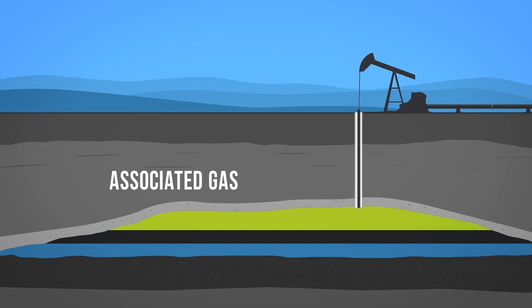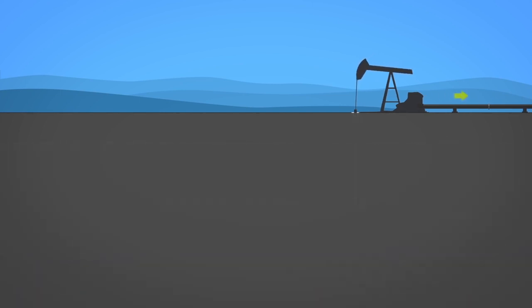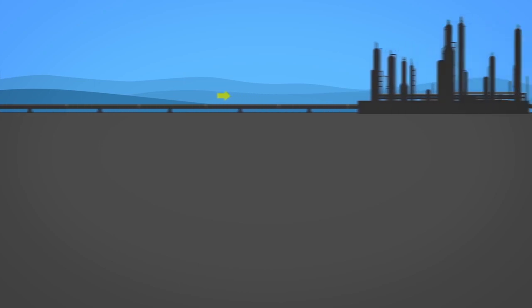In the past, associated gas was commonly flared or burned as a waste product, but in most places today it is captured and used. Once extracted, natural gas is sent through small pipelines, called gathering lines, to processing plants,